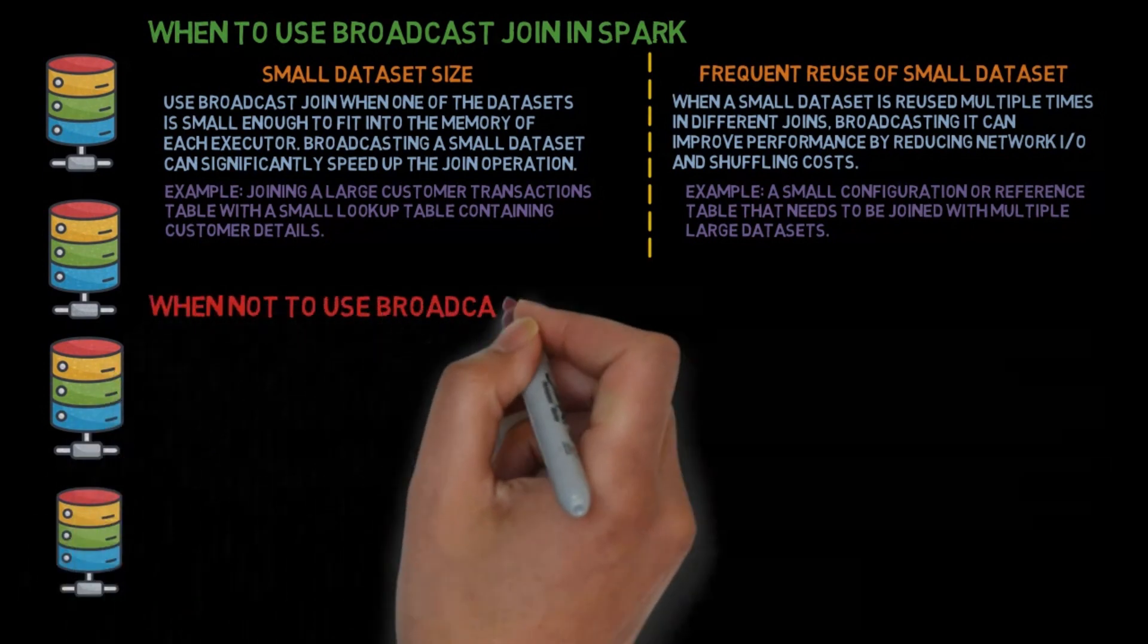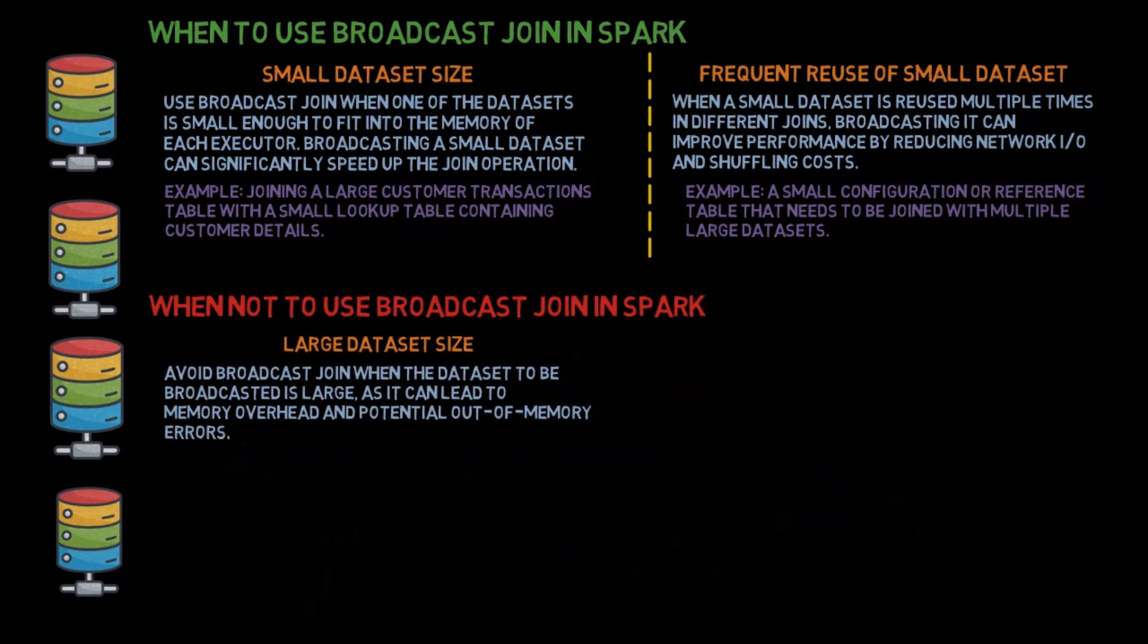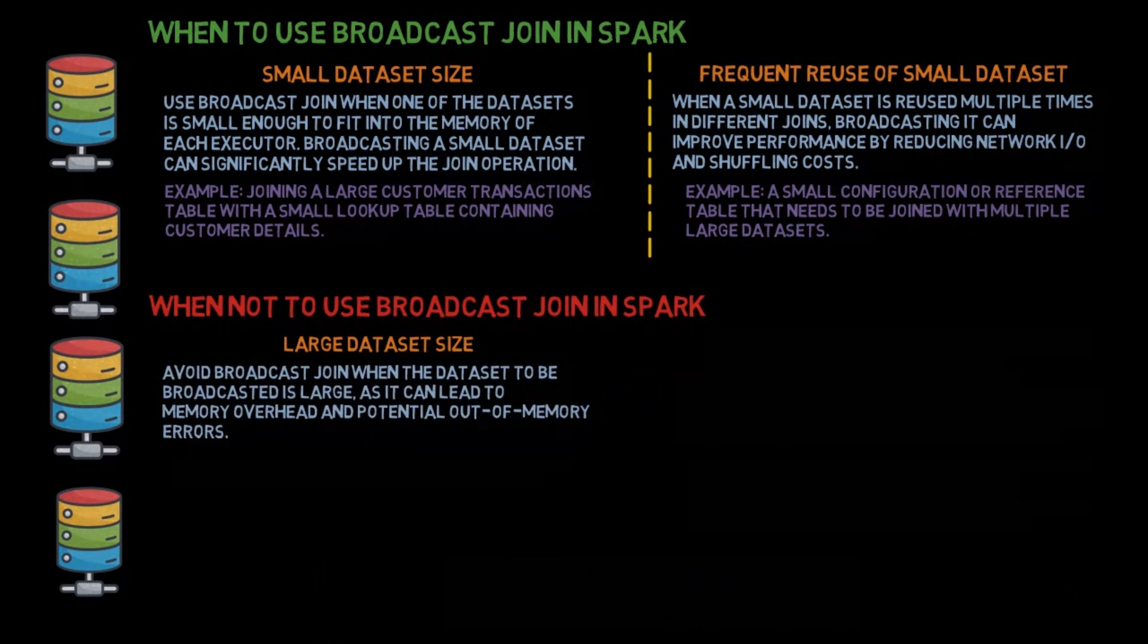When not to use Broadcast Join in Spark. Large dataset size: Avoid Broadcast Join when the dataset to be broadcasted is large, as it can lead to memory overhead and potential out-of-memory errors. Example: Attempting to broadcast a dataset with millions of rows or large data files.